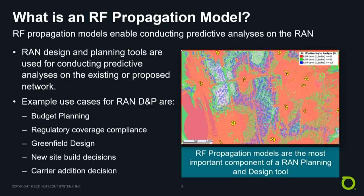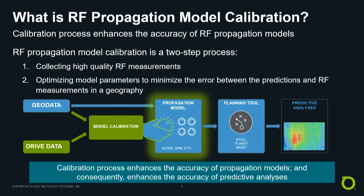This brings us to the next segment: what is RF propagation model calibration? You can think of a propagation model as a box with knobs and dials that change the way the prediction looks and behaves. For instance, one knob could represent how the signal attenuates as you go further away from the site. Another knob could determine how the signal attenuates behind a building or vegetation.